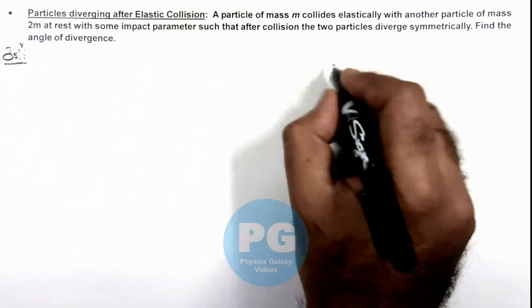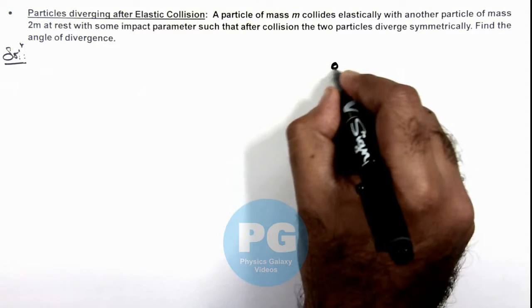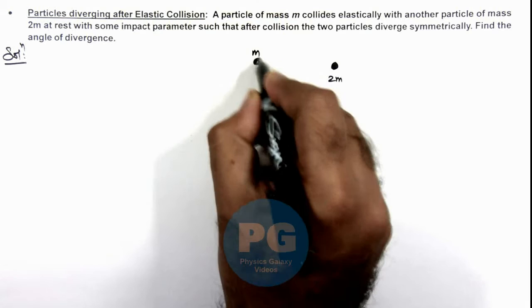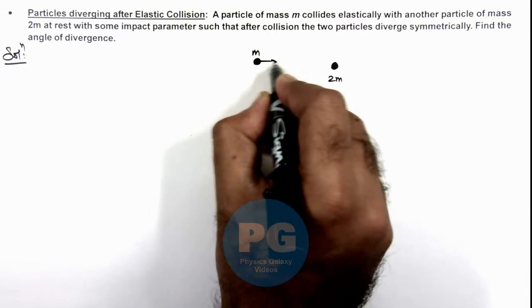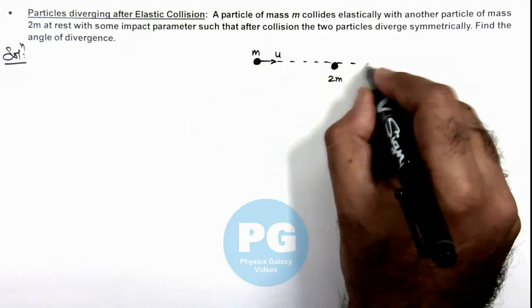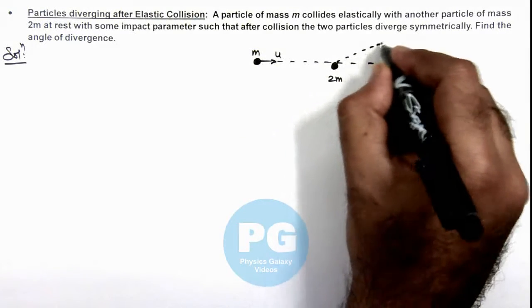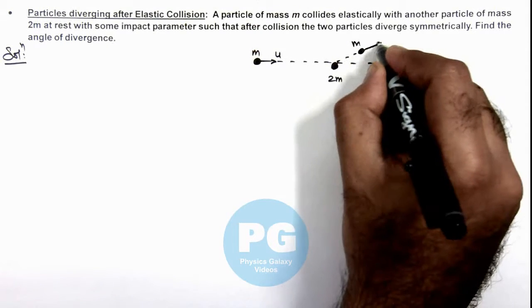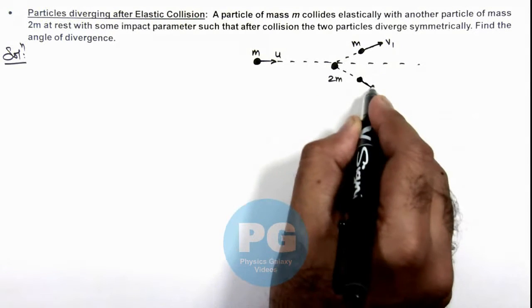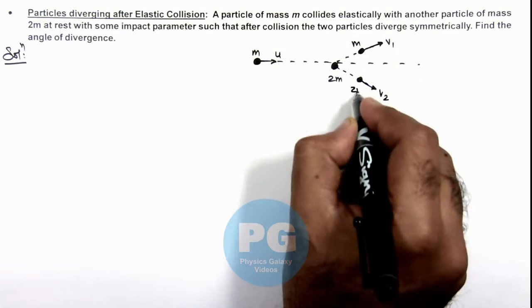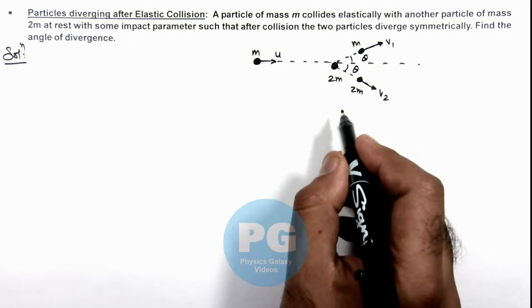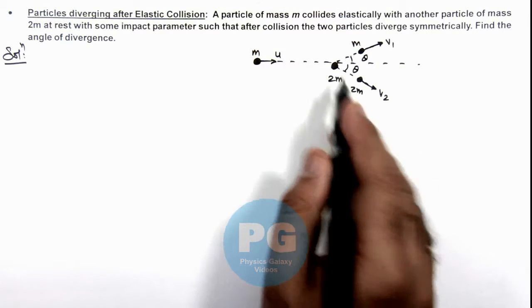If we analyze the situation, there is a particle of mass 2m which is at rest and another particle of mass m is coming at speed u and it strikes this 2m in such a way that the two particles after collision, m here moves with speed v1 and 2m moves with speed v2. It is given that the two particles diverge symmetrically, that means both diverge at the same angle theta. Here we are required to find the value of theta.